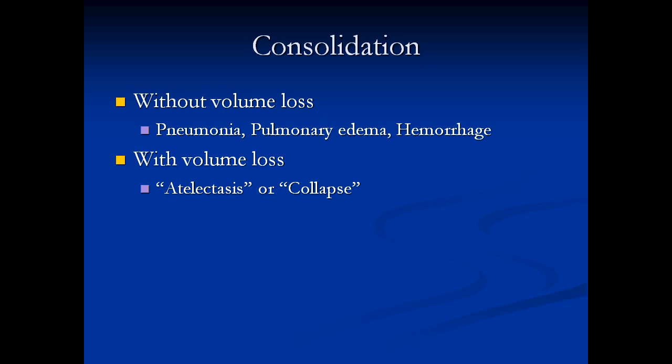Now we're going to talk about some diseases of the lung, starting with consolidation. Consolidation simply means solid lung — lung that is no longer containing air; it is of soft tissue density. There are two types of consolidation. First, consolidation without volume loss, where the volume of the lung is maintained — conditions that cause this are pulmonary edema, pneumonia, and hemorrhage, where the air spaces are filled up with fluid. Then there is consolidation with volume loss, called atelectasis or collapse, and there are certain signs of volume loss I'm going to show you.